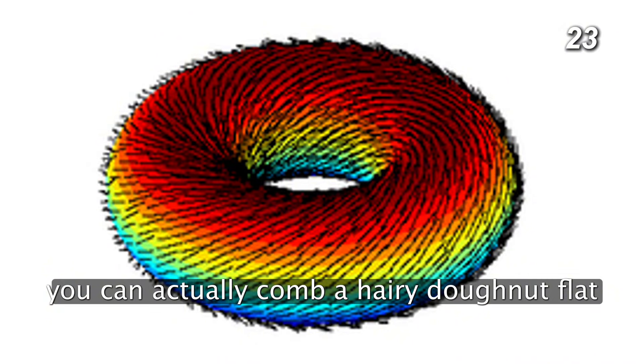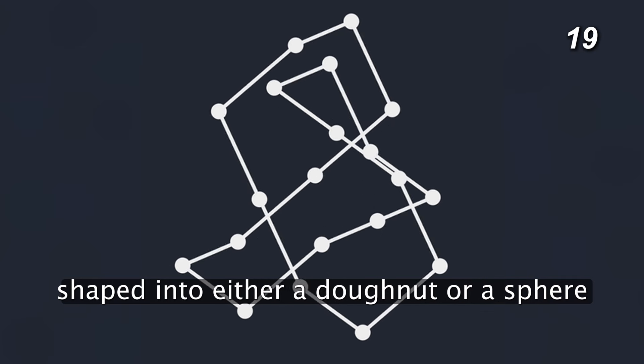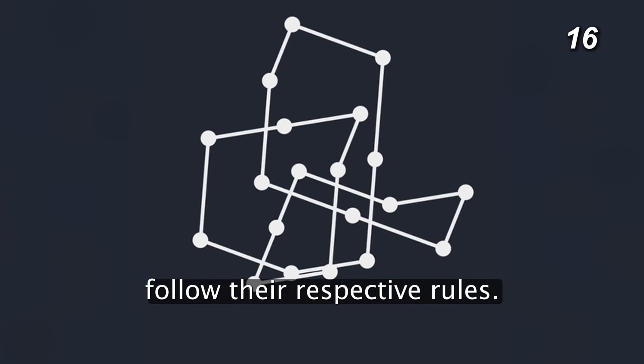Interestingly enough, you can actually comb a hairy donut flat quite easily, and any other object that can be topologically shaped into either a donut or a sphere follow their respective rules.